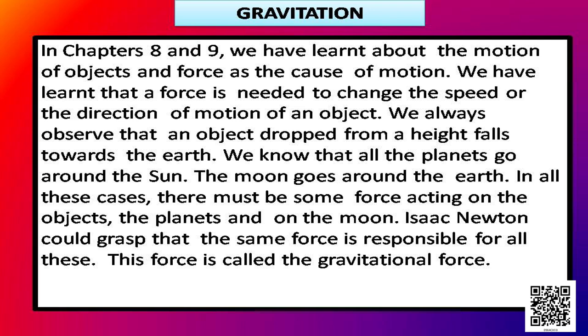We always observe that an object dropped from a height falls towards the earth. We know that all the planets go around the sun and the moon goes around the earth. In all these cases, how are they moving around? How are they not changing their place? Why is it so?